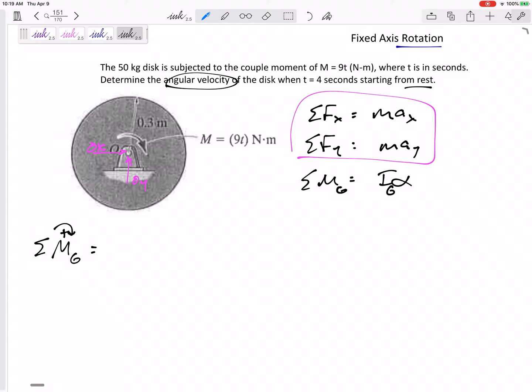Summing moments about G: Ox goes straight through it, Ay goes straight through it, the weight goes straight through it. I really should have drawn a better free body diagram. None of those contribute to the moment. The only moment we have is 9t.